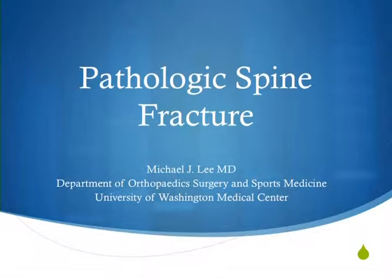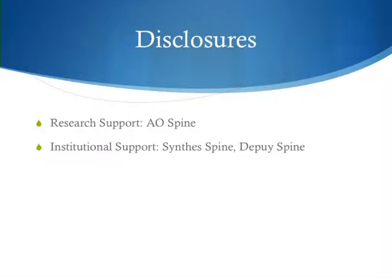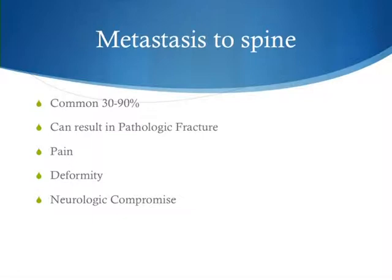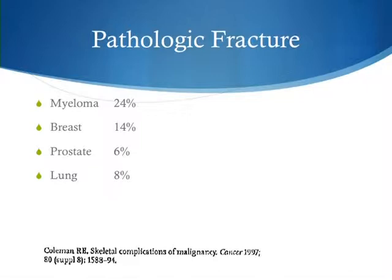Metastatic spine disease is common, and the concern is that it can result in pathological fracture leading to pain, deformity, and potentially neurological compromise. A pathological fracture can come from any primary but is associated with myeloma 24% of the time, breast 14%, lung 8%, and prostate 6% of the time. Treatment options include rest, analgesics, bracing, radiation therapy, cement augmentation, and surgical reconstruction. This presentation will focus on cement augmentation and its role in treating pathological spine fractures.